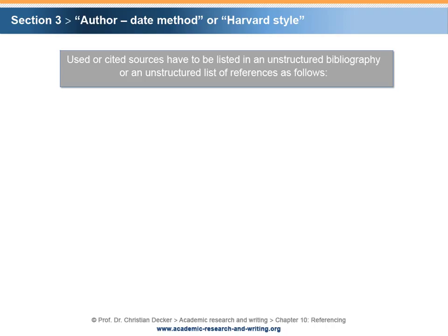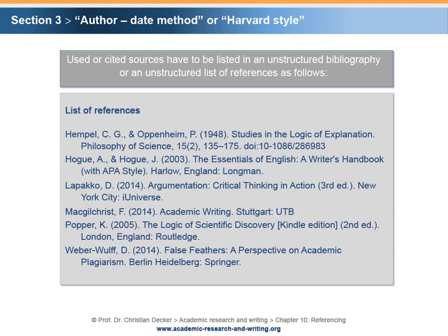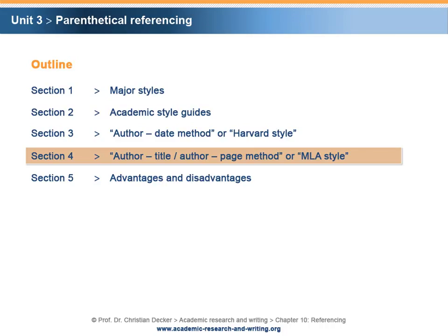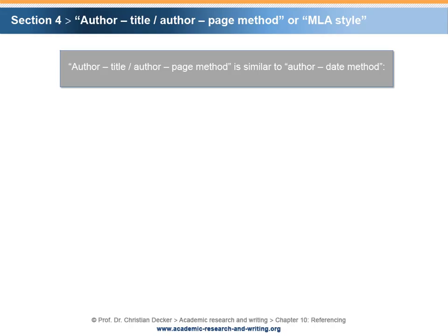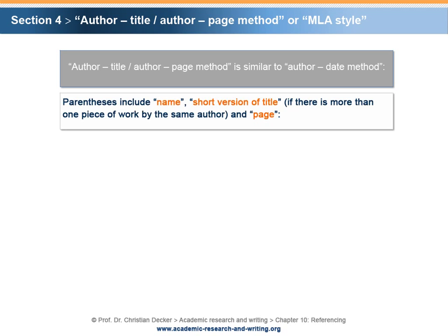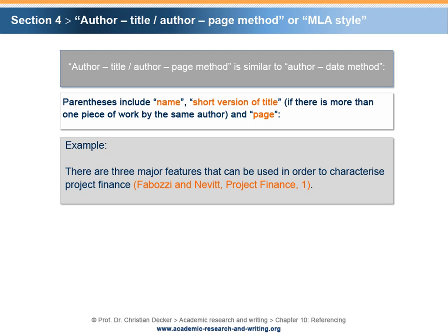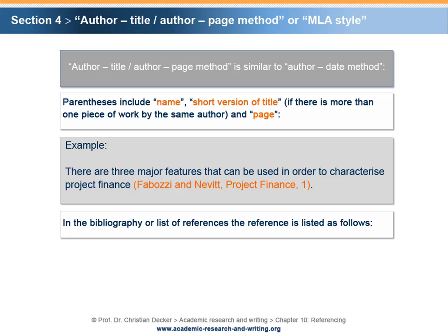Used or cited sources have to be listed in an unstructured bibliography or an unstructured list of references. Section 4 – Author-Title or Author-Page Method or MLA Style. The Author-Title or Author-Page method recommended by the MLA Style Guide is used in a slightly different way to the Author-Date method. The parentheses of the reference include the author's name, a short version of the title if there is more than one piece of work by the same author, and the page. In the Bibliography or List of References, the reference is listed accordingly.